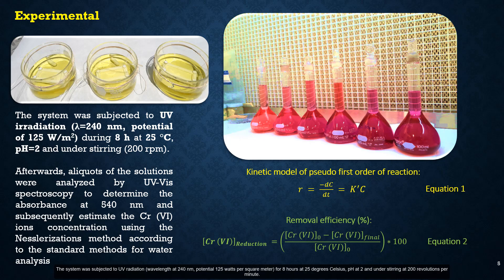The system was subjected to UV radiation at wavelength 240 nanometers, power 125 watts per square meter for 8 hours at 25 degrees Celsius, pH of 2, and under stirring at 200 revolutions per minute. Subsequently, aliquots of the solution were analyzed by UV spectroscopy to determine the absorbance at 540 nanometers, and subsequently estimate the concentration of chrome ions using the Nesslerization method according to the standard methods for water analysis.